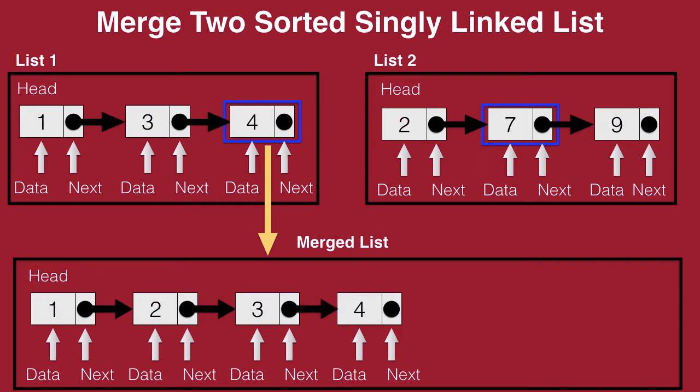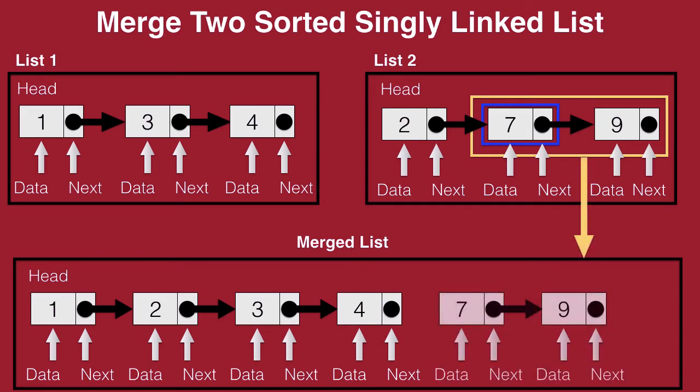Since we have brought down 4, we advance to the next node, which is none — that's the end of list 1. Now that list 1 has come to an end, list 2 has nothing to compare itself with and the remaining nodes of list 2 are already in sorted order. So now all that we need to do is bring down these nodes as-is into our merged list. From the next of 4, we establish a connection to the node with the data 7, and that completes the merging of list 1 and list 2.